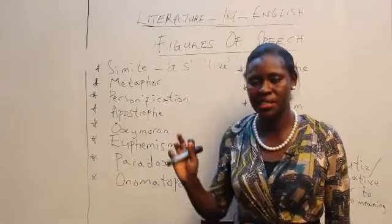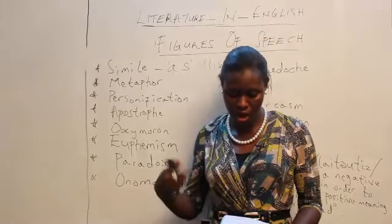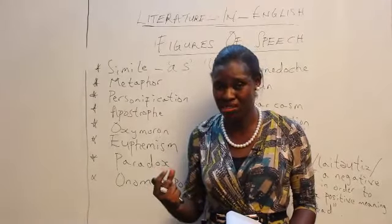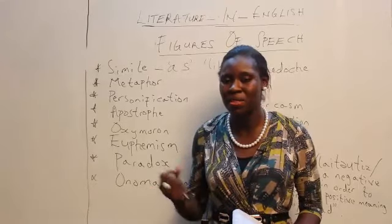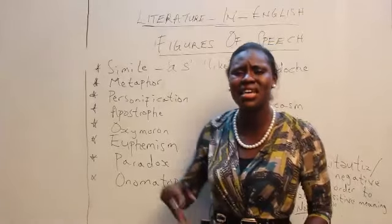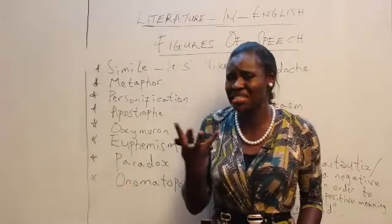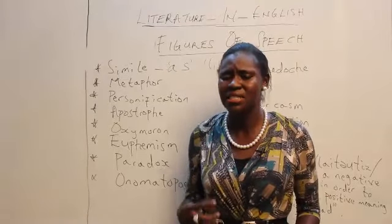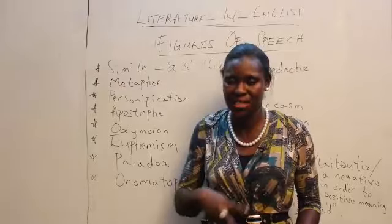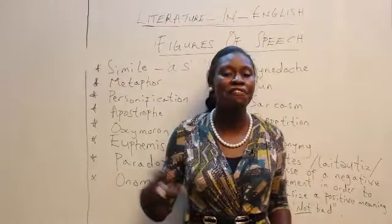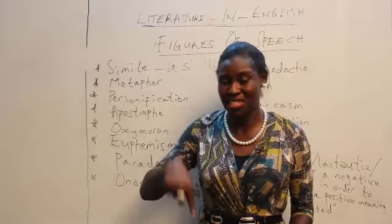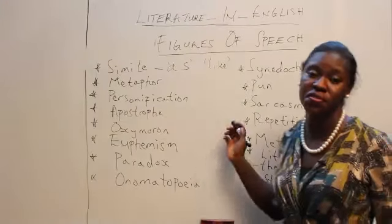Apostrophe is an instance where a writer or speaker makes a direct address to a thing or an abstraction — something that is abstract — as if it's present with them. For example, 'death, be not proud.' Death is an abstract idea, but the speaker brings death closer, as if death were in the room. A popular poem says 'Africa, my Africa' — you personalize Africa as a concept as if it's right there with you.